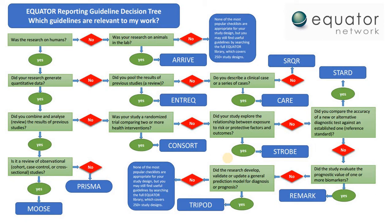If you are not confident in classifying your study design, you can use this decision tree to decide which reporting guidelines you should use. You start here: was the research on humans? If no, then it is an animal preclinical study and you use ARRIVE guidelines. Following this algorithm will help you decide which reporting guideline is suitable for your research.